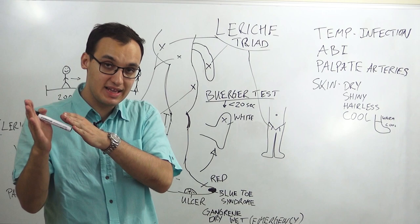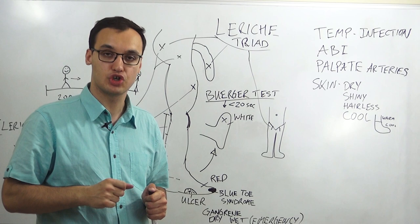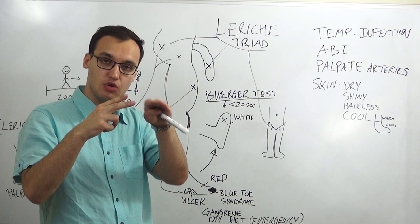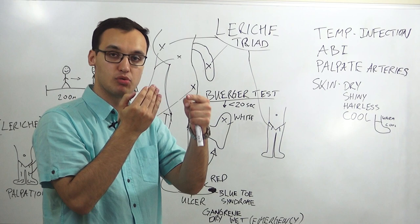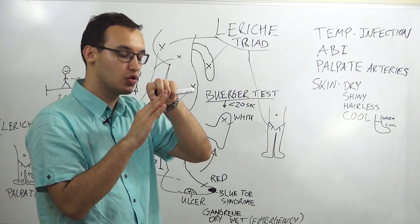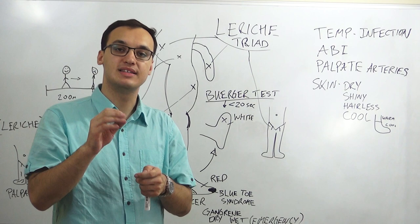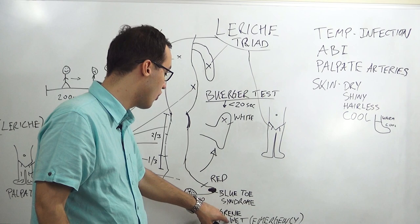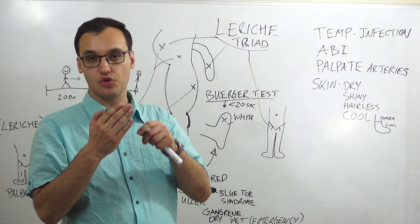Gangrene can also occur — necrosis of the toes. Dry gangrene is dry, hard, black, with a very distinct demarcation between the black toe and normal tissue. Wet gangrene is more moist, blistering, and swollen — it is more severe than dry gangrene and requires surgical emergency. Blue toe syndrome is another sign: blue discoloration of the toes.